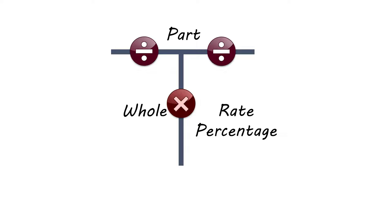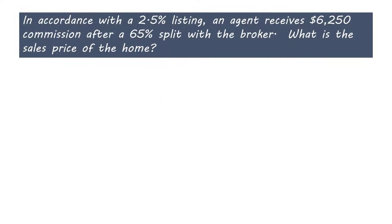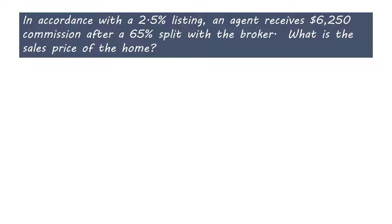So let's get started applying the T-bar method to our questions. Question number one: in accordance with a 2.5% listing, the agent receives $6,250 commission after a 65% split with the broker. What was the sales price of the home? The question is asking for the sales price of the home and provides commission information. This is a typical commission problem you may find on your exam.